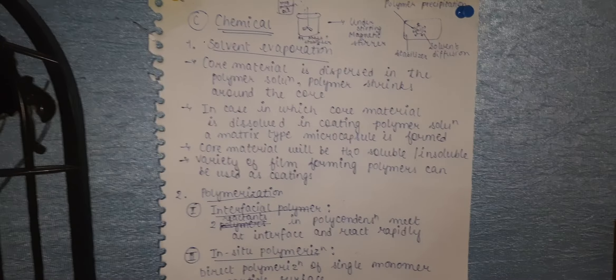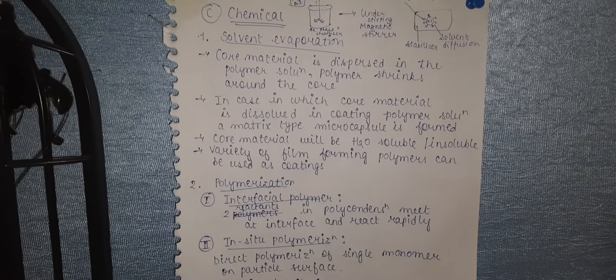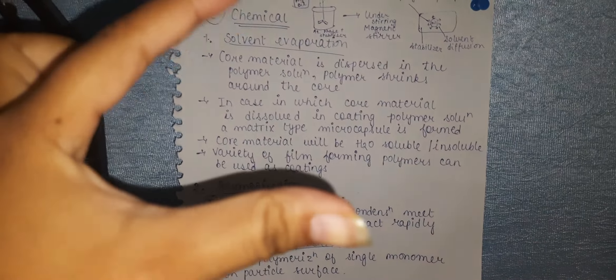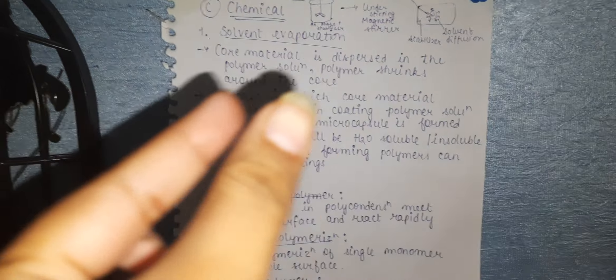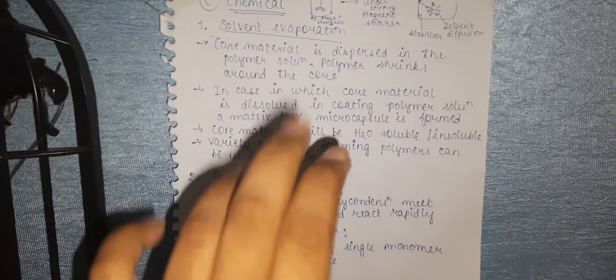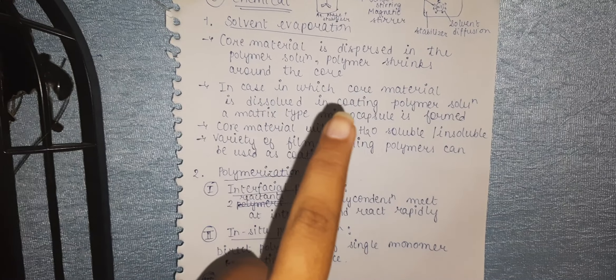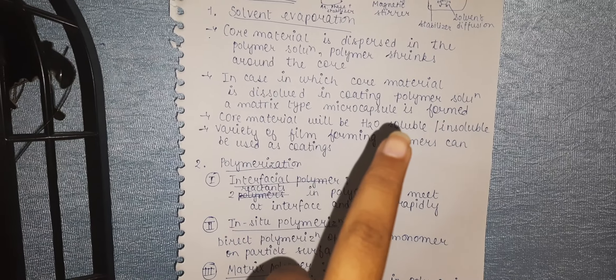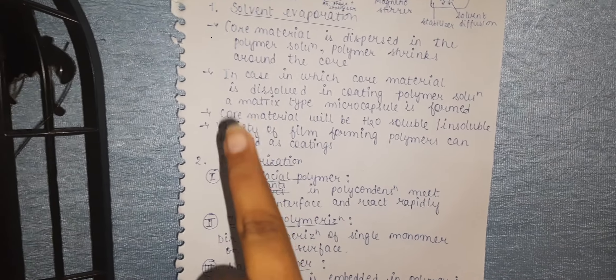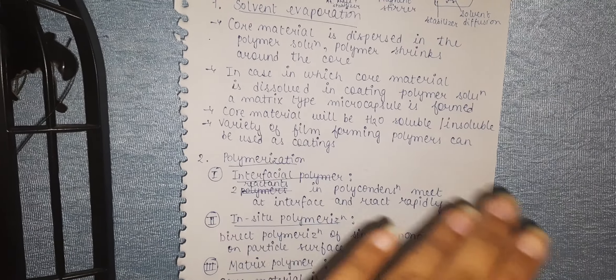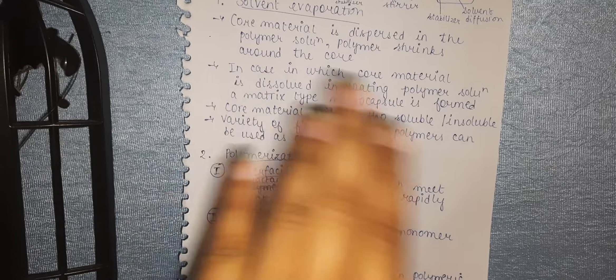The core material is dispersed in the polymer solution, and the polymer solution shrinks around the core material to form an encapsule. If the core material is dissolved in the coating polymer solution, a matrix-type microcapsule will be formed. The core material can be either soluble or insoluble in water, and a variety of film-forming polymers can be used as coating materials.